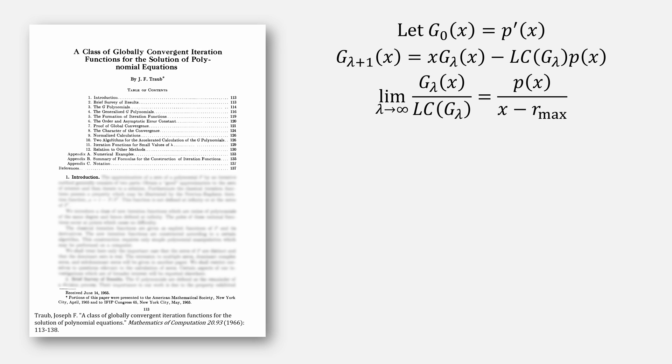Traub's strategy is to construct a special polynomial, which he calls g, which actually starts with the derivative. Its next iteration for g is given by this equation. The reason this works is because the limit as our lambda approaches infinity, g of lambda divided by its leading coefficient approaches the polynomial divided by x minus the root.